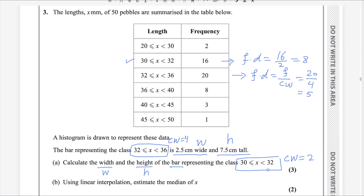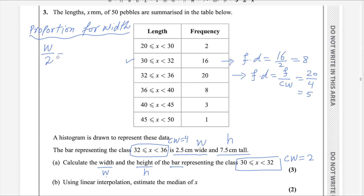To find the width of this class, we will take the proportion. We divide the bar width by the class width of the respective class. Width divided by class width of 2 equals width of the other bar divided by class width of that class. Width of that bar is 2.5, divided by its class width of 4. So 2.5 divided by 4, multiplied by 2, gives the width as 1.25 centimeters.